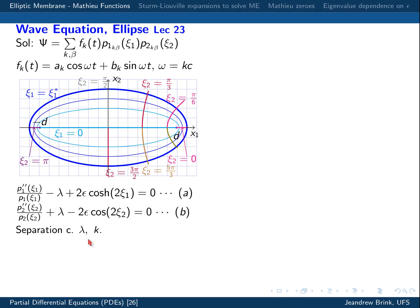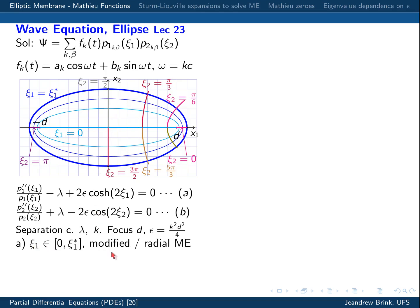The modified or radial Mathieu's equation we'll call A, and the standard Mathieu's equation studied traditionally we'll call B. The separation constants are lambda, which arises when you separate the elliptic coordinates, and kappa, which arises when you separate out the time part. The focus is D and epsilon depends implicitly on kappa as well as D. C1 is the variable entering the modified radial equation, while B is the regular or angular Mathieu's equation.